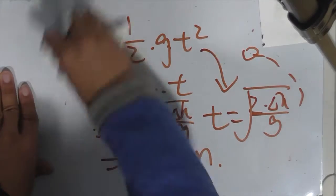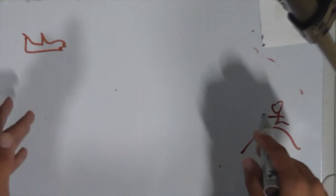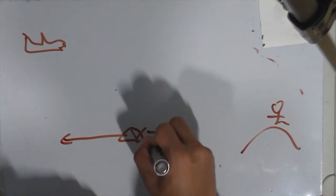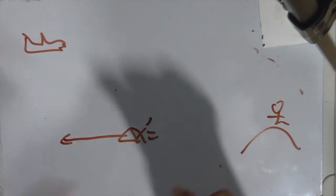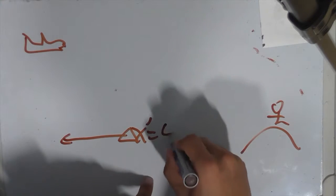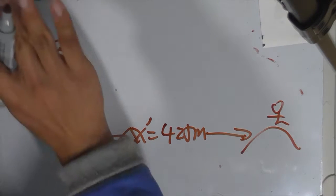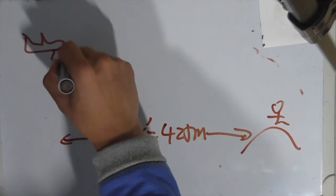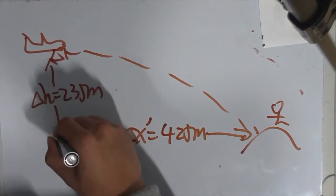That is the answer to question 1. Now let's go to question 2. Suppose the plane releases the supply a horizontal distance of 425 meters in advance of the mountain climbers. We name this delta x prime to differentiate it from delta x in question 1, so delta x prime equals 425 meters. The vertical drop delta h remains 235 meters.